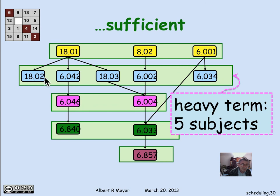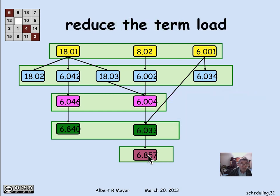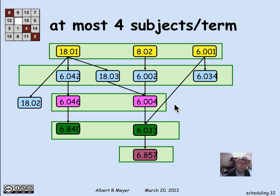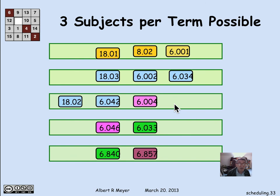One consequence of the greedy schedule is a heavily loaded second term — five subjects — compared to just one subject in the final term. It's possible to adjust the term load: for instance, shift 18.02 to the third term, since its prerequisites are satisfied after term one but it doesn't have to be taken in term two. This lightens the second term to four subjects while increasing the third to three. With some fiddling, you can find a graduating schedule requiring no more than three subjects per term. We'll examine the minimum number of subjects per term in the next segment.